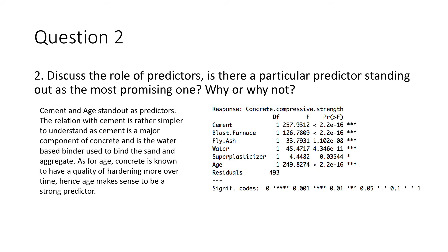In question two, we're supposed to discuss the role of predictors. Is there a particular predictor standing out as the most promising one, and why or why not? So, for this question, I used ANOVA type 2. We're able to see cement and age have stood out as predictors by the F ratio being comparatively way more than the other predictors, and this does make sense that cement and age are standing out as predictors. The relation with cement is rather simpler to understand as cement is a major component of concrete and is the water-based binder used to bind the sand and aggregate.